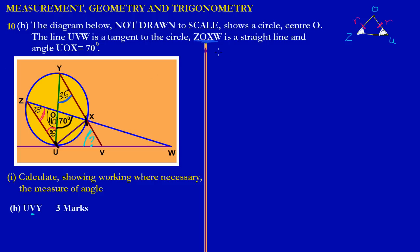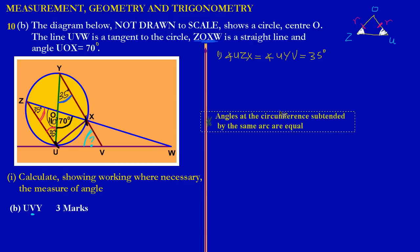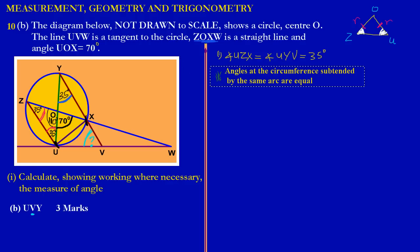Since both angles at the circumference are standing on the same arc, they are equal. So since angle UZX is 35 degrees, the angle UYX is also 35 degrees. Therefore, you can state: angle UZX equals angle UYV, which equals 35 degrees. That's a geometric concept, so we have to state our reason: angles at the circumference subtended by the same arc are equal.